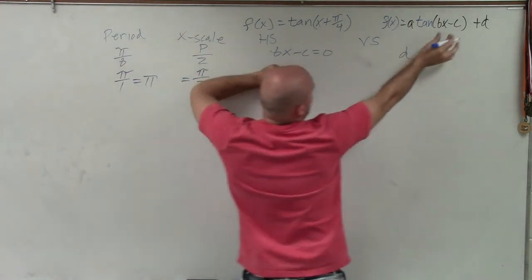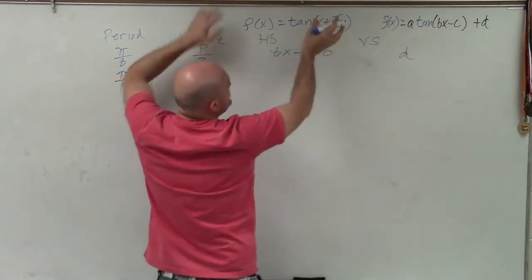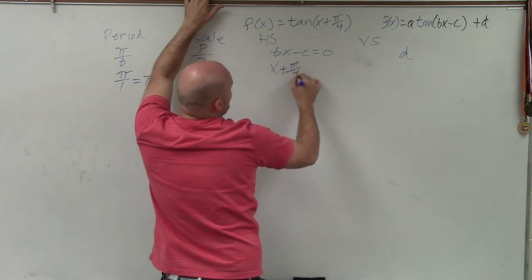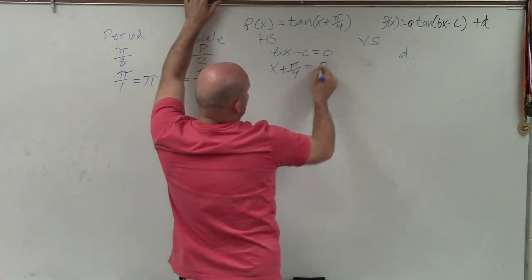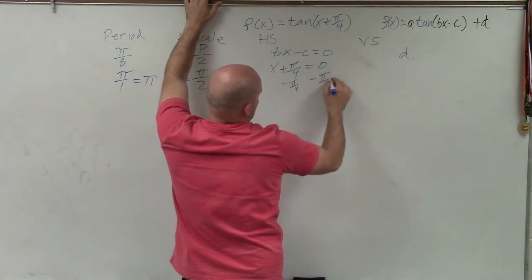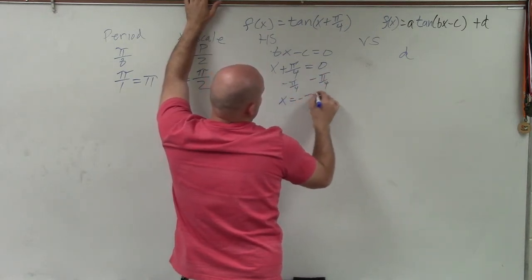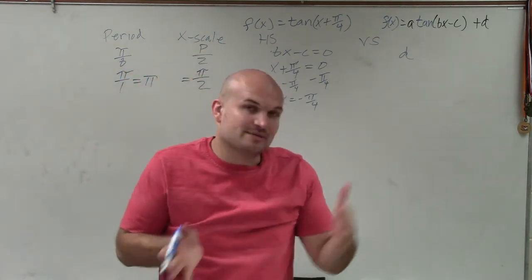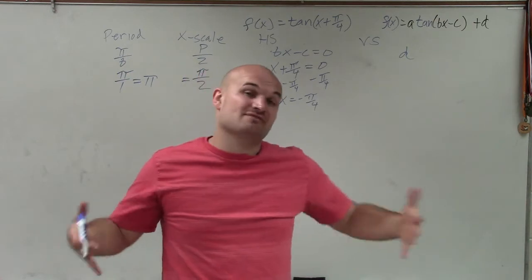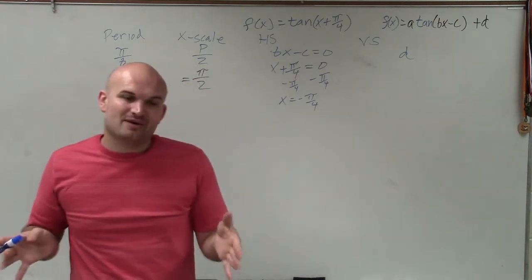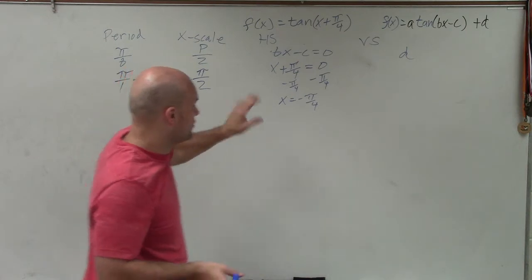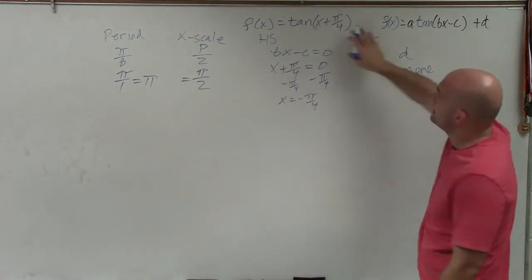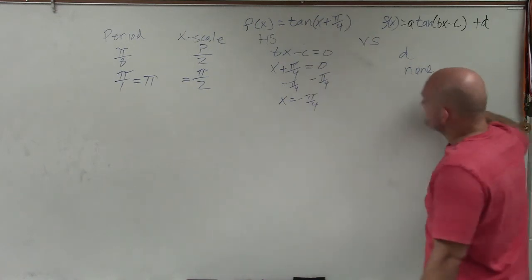Horizontal shift: Bx minus C is what's inside the parentheses. All you want to do is take whatever's inside the parentheses and set it equal to 0, so x plus π over 4 equals 0. Subtract π over 4, and x equals negative π over 4. So the graph is going to be shifted π over 4. I like to start graphing at the horizontal shift. The last thing is D, which in this case we do not have — there's nothing added to the end of my function, so it's none.